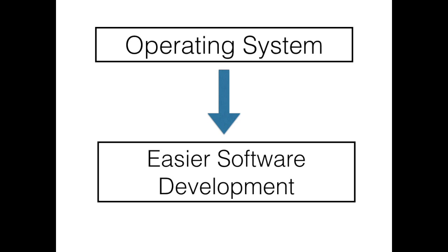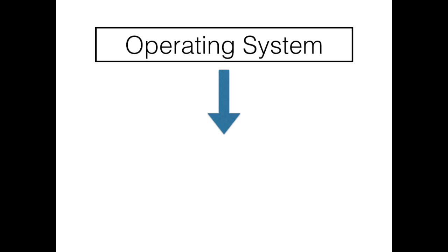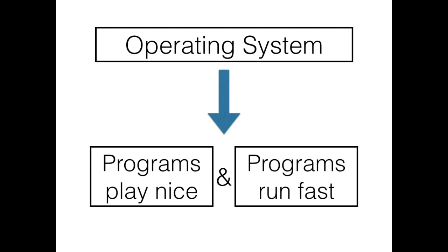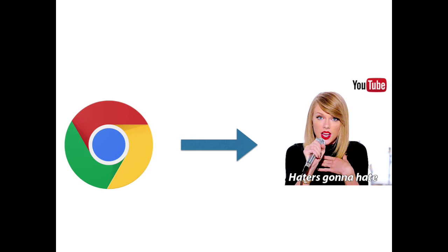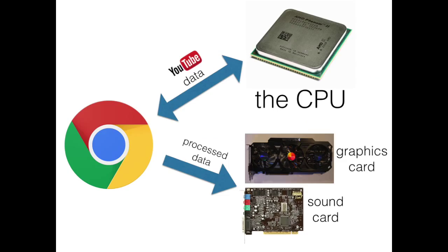Operating systems make it easier to create software. They are also in charge of making programs play nice with each other while running as fast as possible. Programs generally do their work — also called computation — on a computer's main microchip called the central processing unit, or CPU. For example, when Chrome goes to play the music video for Shake It Off, it first needs to process and decompress the data it's getting from YouTube, and it will use the CPU to do so. Once complete, the browser needs to send that data to the graphics card and the sound card via the drivers for those cards.